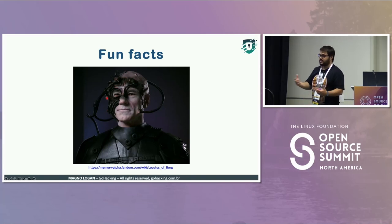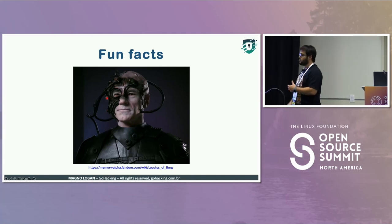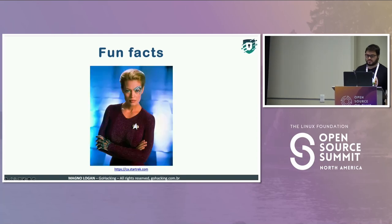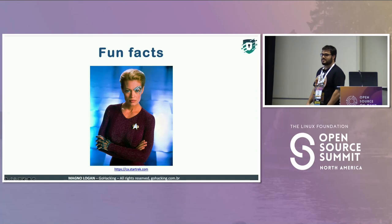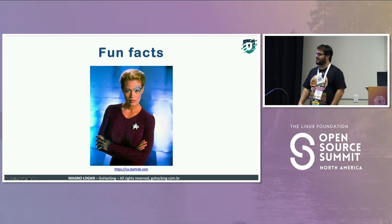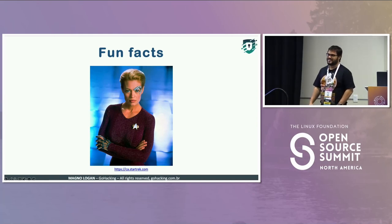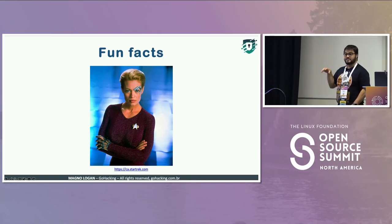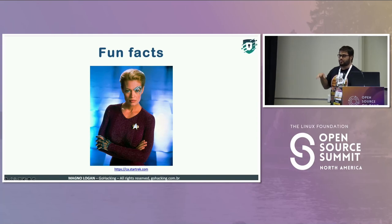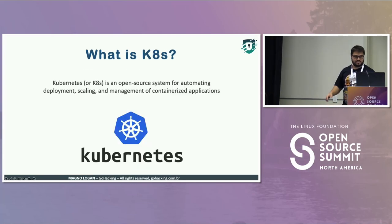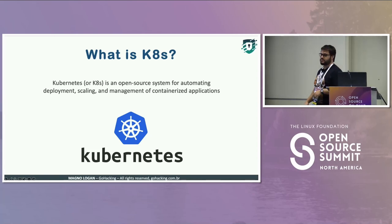The baseline project that generated Kubernetes was a project from Google called Borg. And the third fun fact — Seven of Nine. The name of the original project of Kubernetes was called Project 7, and the reference is because of Seven of Nine. That's why on the Kubernetes logo, instead of usually having six or eight points, you have seven.